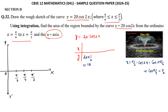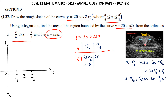When x = π/4, cos2x = cos(2 × π/4) = cos(π/2) = 0, so y = 20 × 0 = 0.